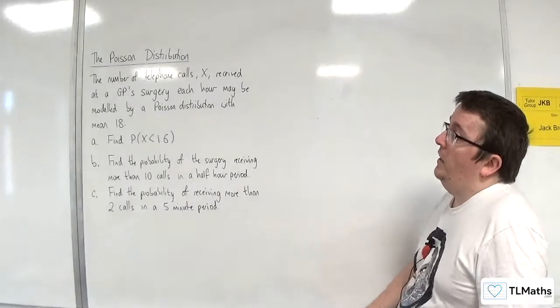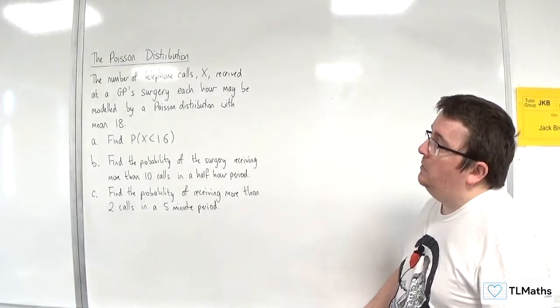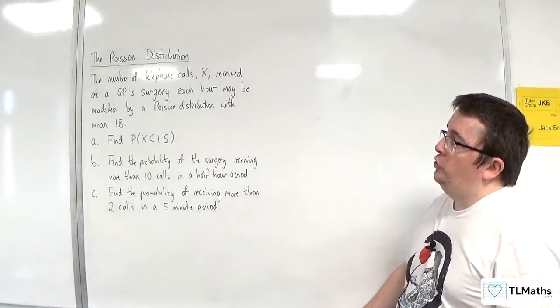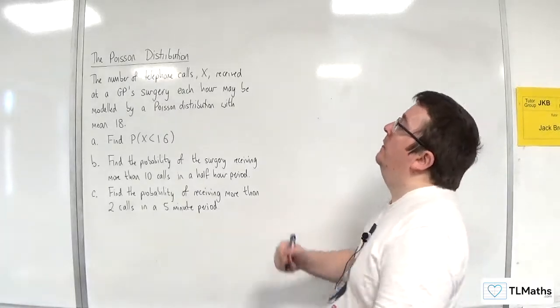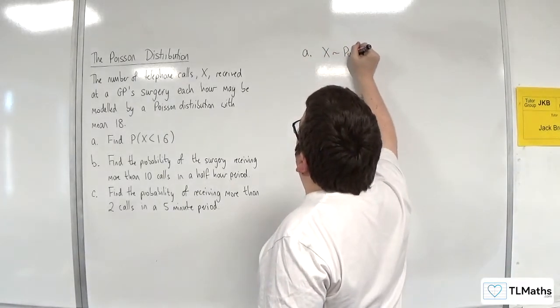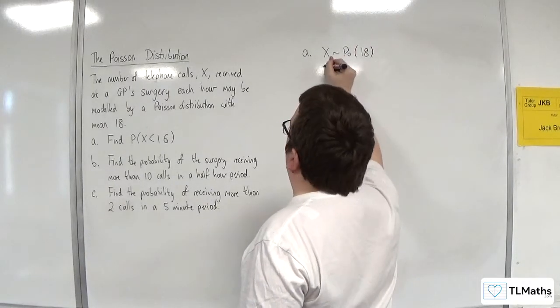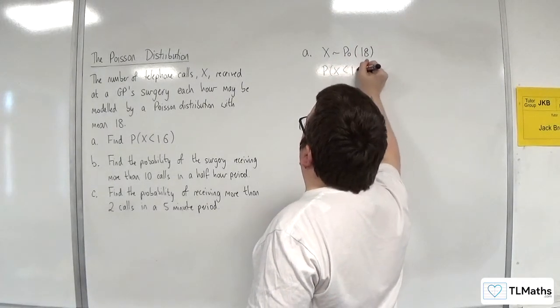So in this problem, the number of telephone calls X received at a GP surgery each hour may be modeled by a Poisson distribution with mean 18. So for part A, X is a Poisson distribution with a mean of 18, and we want to find the probability of X being less than 16.